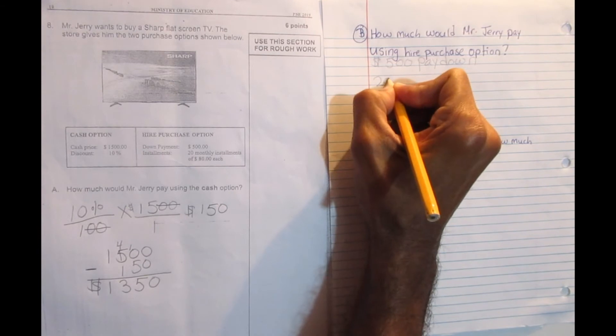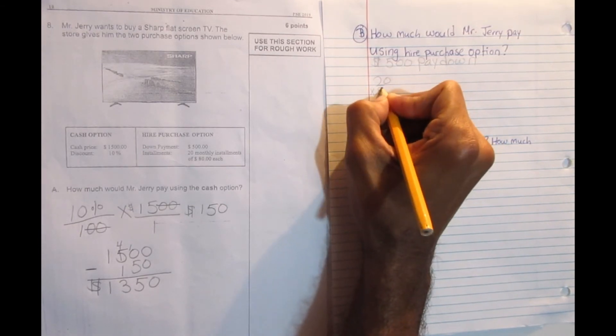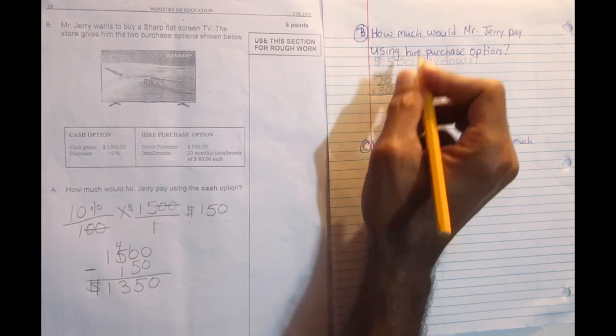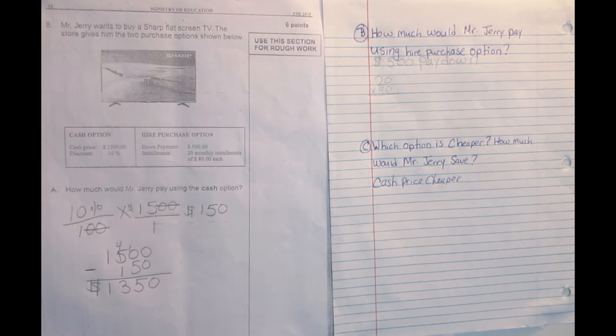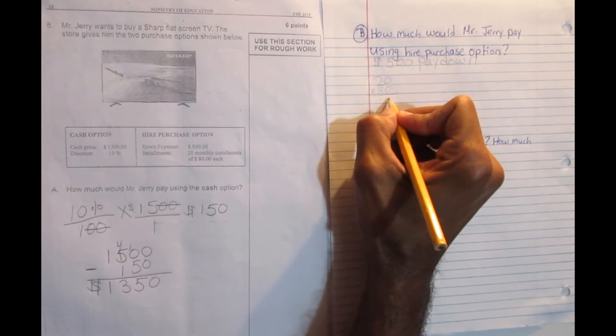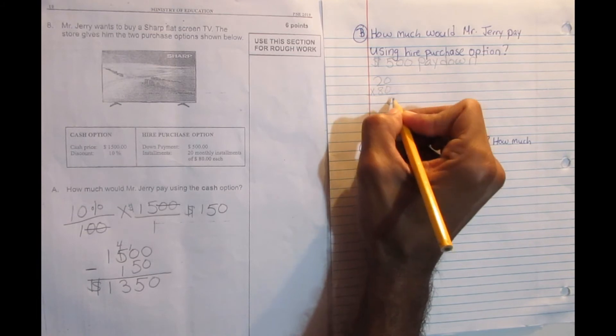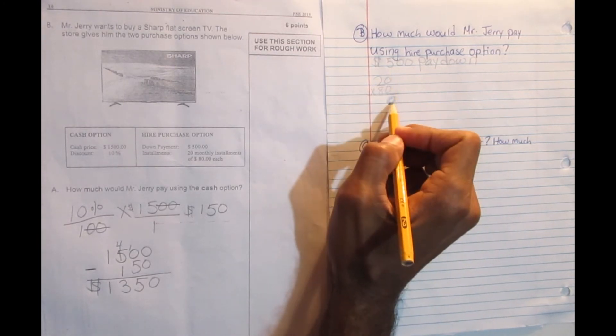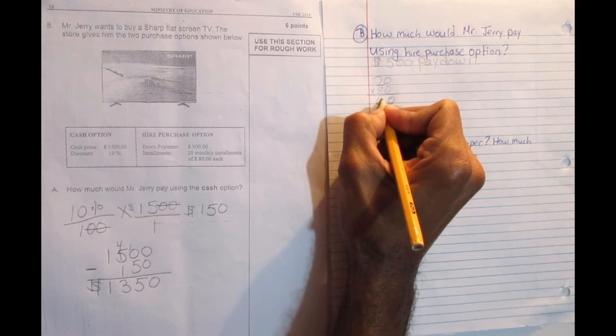So it's 20 times 80. Then we'll add the $500 to it, and that will be the hire purchase price. 0 from 0. 0 times 0 is 0. So 0 times 0 is 0. 0 times 2 is 0.